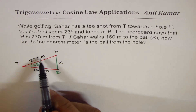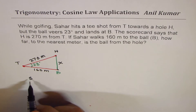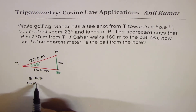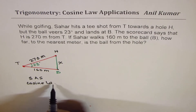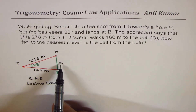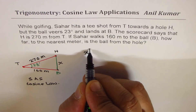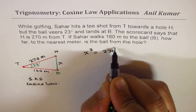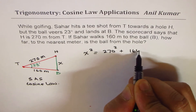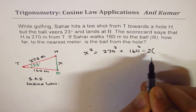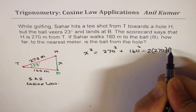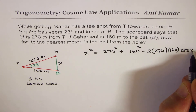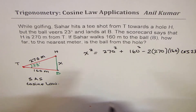Now, since we know two sides and an included angle — SAS — we should be applying the cosine law. To find X, applying cosine law, we get X squared equals 270 squared plus 160 squared, minus 2 times 270 times 160 times cos of the angle, which is 23 degrees.